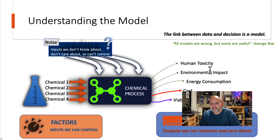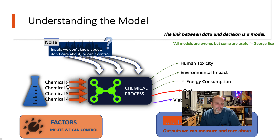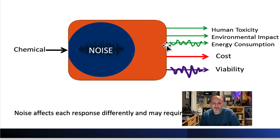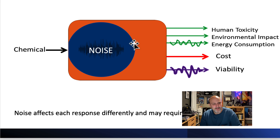Examples of responses might include human toxicity, environmental impact, energy consumption, cost, and always viability. Noise puts a wiggle into different outputs differently — a certain type of noise might only affect viability or energy consumption and not everything else. The way to handle noise is usually to do replicates or more experiments and try to remove it if we can.